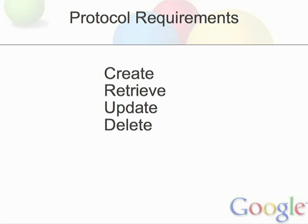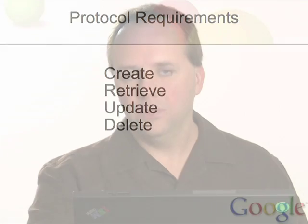So if you're going to design a protocol — and this is what we have with the Atom Publishing Protocol — you really need to do four things. You would want to be able to create new entries on a weblog. You'd want to be able to retrieve any new or old entries. You would want to update entries that already exist. And lastly, you'd want to delete entries.